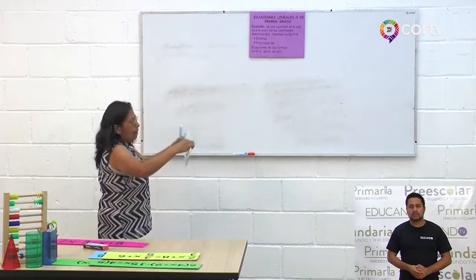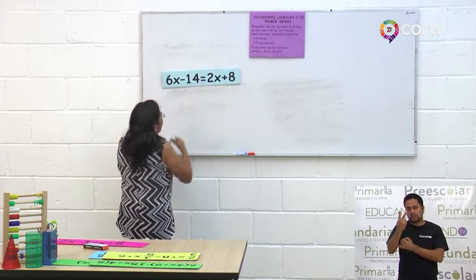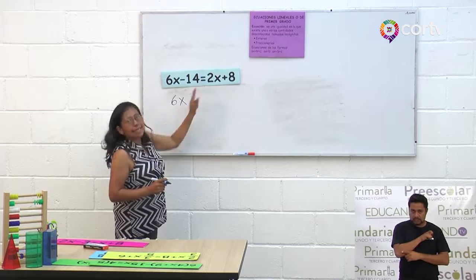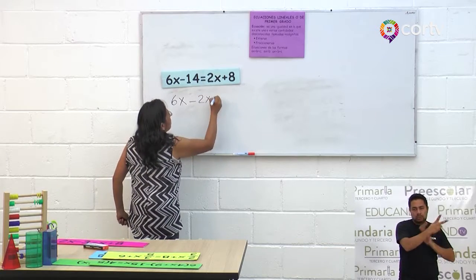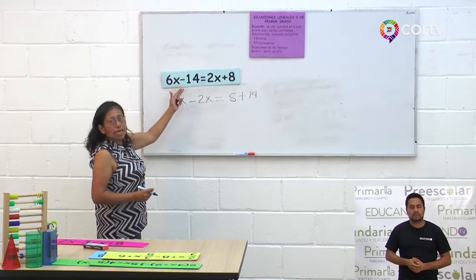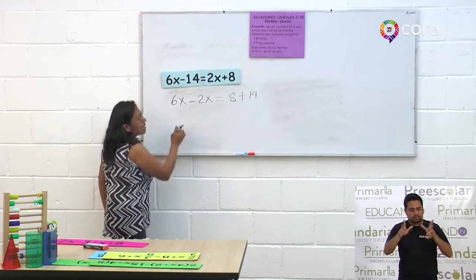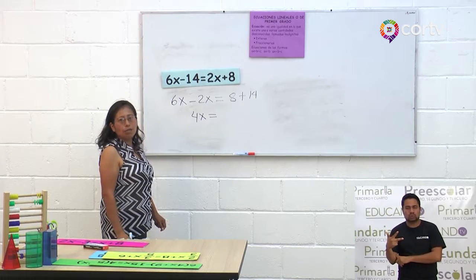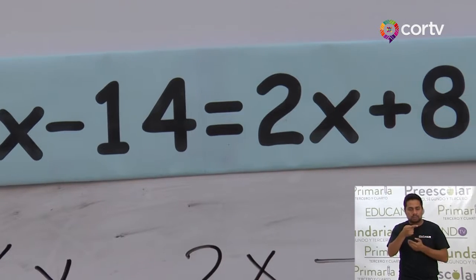6X menos 14 igual a 2X más 8. El 2X está en el segundo miembro y lo vamos a pasar al primer miembro con su inversa: menos 2X. Igual a 8 más 14, porque el 14 en el primer miembro está como negativo y en el segundo miembro pasa como positivo. 6X menos 2X es 4X. Ahora, ¿qué vamos a hacer? Vamos a despejar la X.